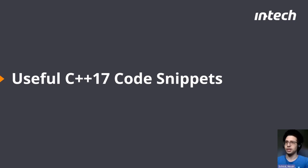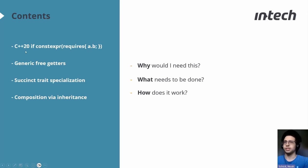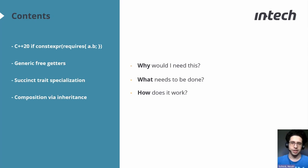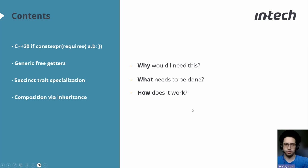I want to focus on some useful snippets I wrote along the way, specifically on these four topics. First, I want to use something like the requires keyword from C++20, but due to restrictions I can only use C++17 features, so I wanted to imitate that in C++17. The remaining points build on top of that: generic free getters and how to implement them, how to succinctly specialize those getters, and then composition of classes using inheritance to save even more on code redundancy. For each topic I'll focus on motivation and then how to implement it and how the compiler makes it work.